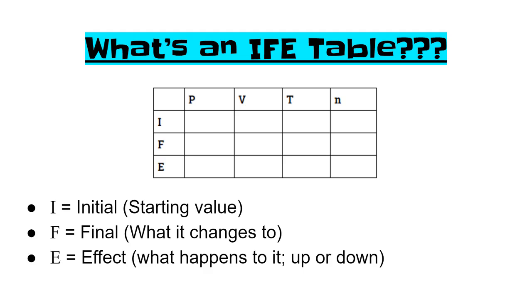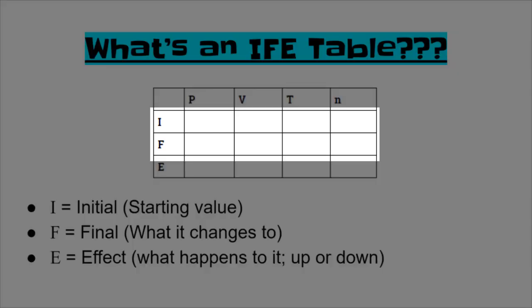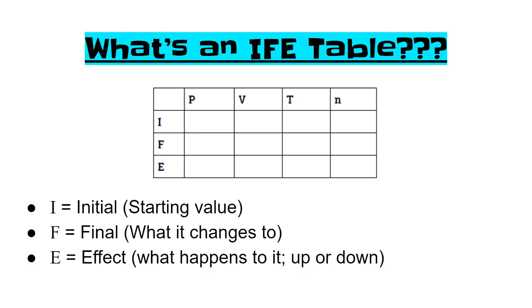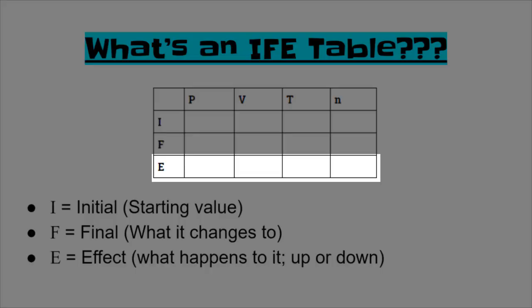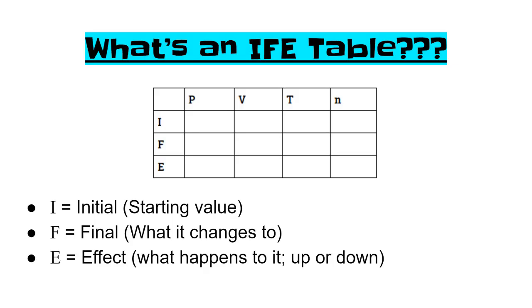That means that in the I and F rows you're going to actually have numbers with units like liters or atmospheres for pressure. But in the E row you're going to only have an arrow. The arrow is either going to be pointing up or pointing down depending on what that variable is doing. Filling out these tables is very easy.